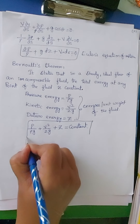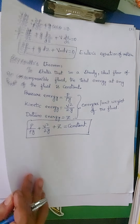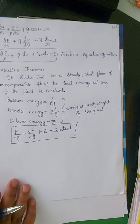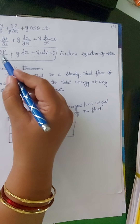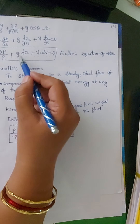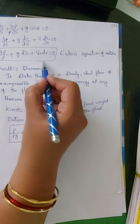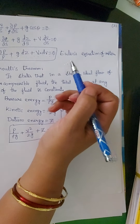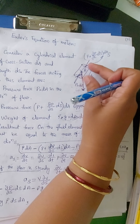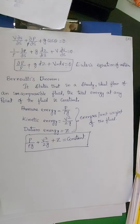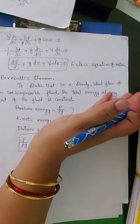Now let us derive Bernoulli's theorem. We will derive Bernoulli's theorem from Euler's equation of motion. We derived Euler's equation of motion in the previous class. This Euler's equation was derived by considering a small fluid element. To get Bernoulli's equation, we have to integrate this Euler's equation of motion.